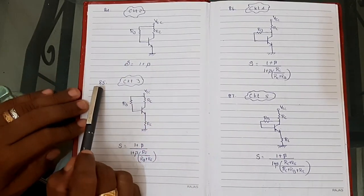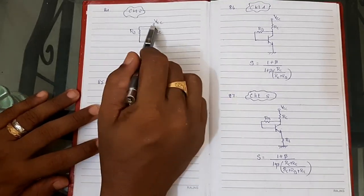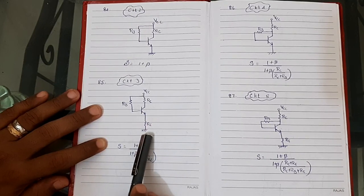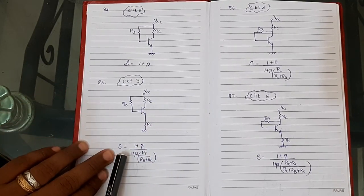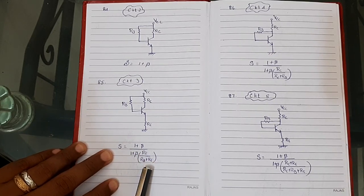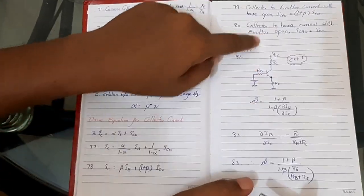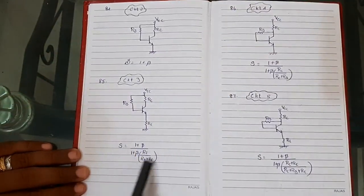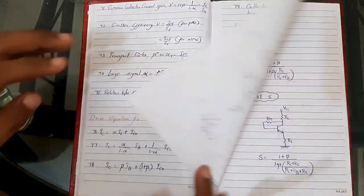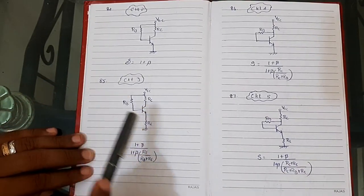Formula 85 for Circuit 3 (similar to Circuit 2 but with an emitter resistor to ground): Stability S = (1+β) / [1 + β·RE / (RB + RE)]. This stability is the same as that of Circuit 1 — both circuits yield S = (1+β) / [1 + β·RE / (RB + RE)].